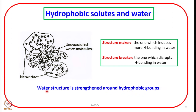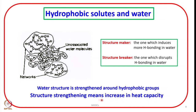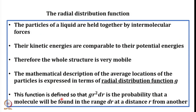Around hydrophobic groups, water is strengthened because hydrophobic groups do not like water. If they do not like water, the hydrophobic groups will like to come close and form clusters, and they want to avoid water — that means more hydrogen bonding will be introduced in the surrounding water molecules. Structure strengthening also means increase in heat capacity, which is very obvious. Now to deal with the condensed phases, to deal with the liquids, how it is done is to introduce the radial distribution function.